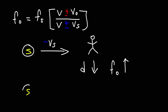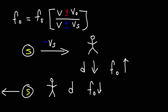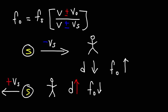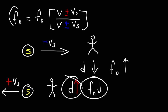When the source moves away from the observer, the observed frequency has to go down. VS is still in the denominator. The only way to decrease the value of the entire fraction is to increase the value of the denominator. So we need to use positive VS. Increasing the denominator decreases the value of the whole fraction, so FO becomes less than FS.